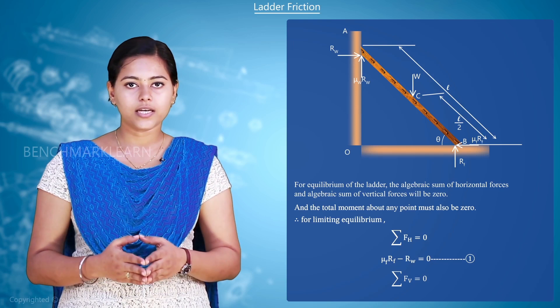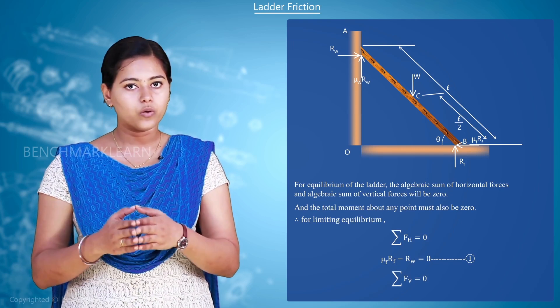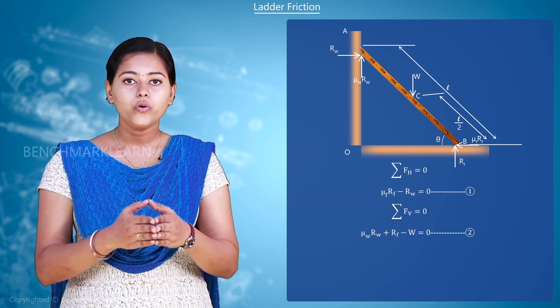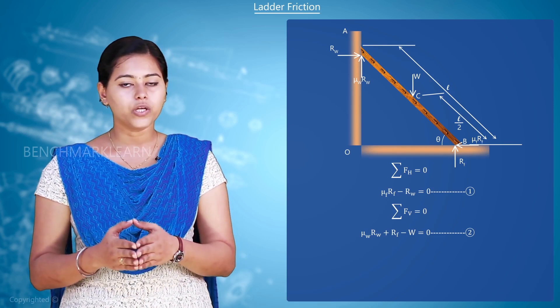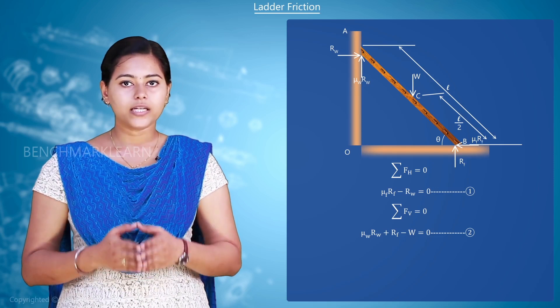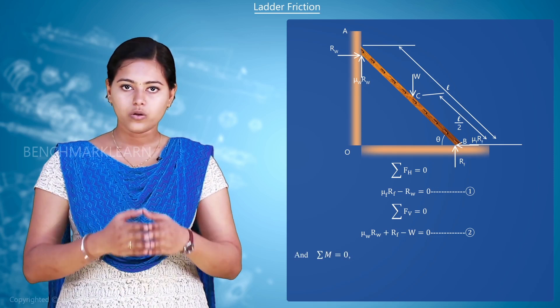Now, the next condition is sigma Fv equal to 0. That is mu W Rw plus Rf minus W equal to 0. Mark it as second equation.